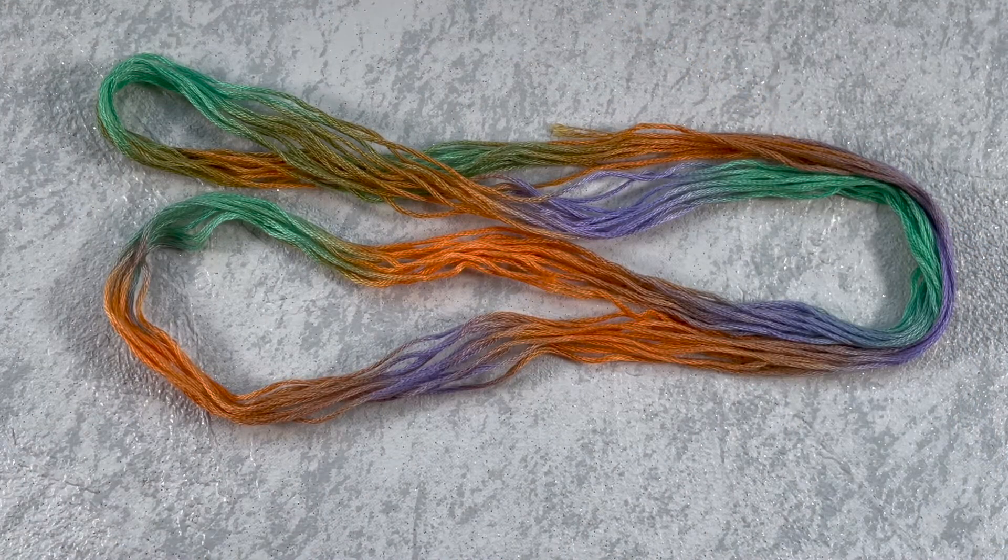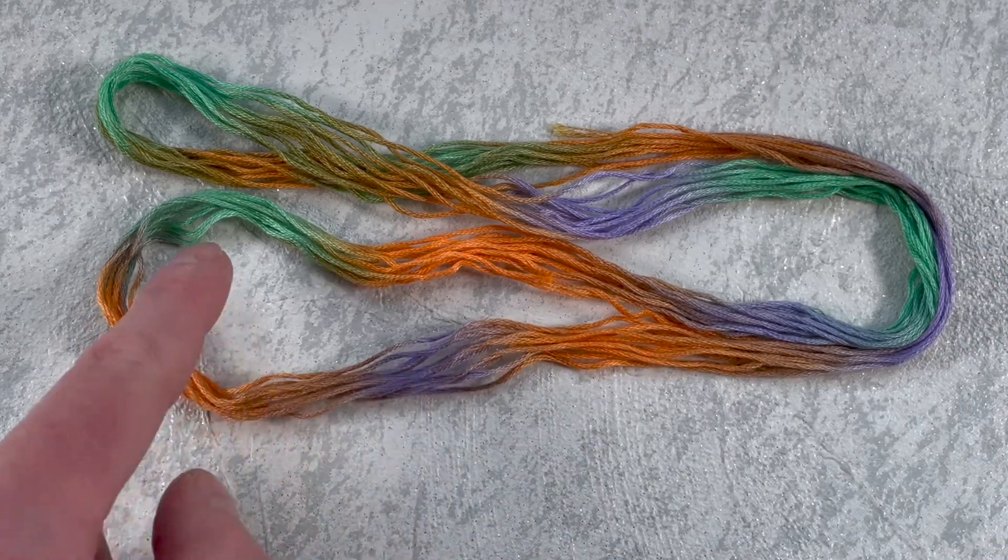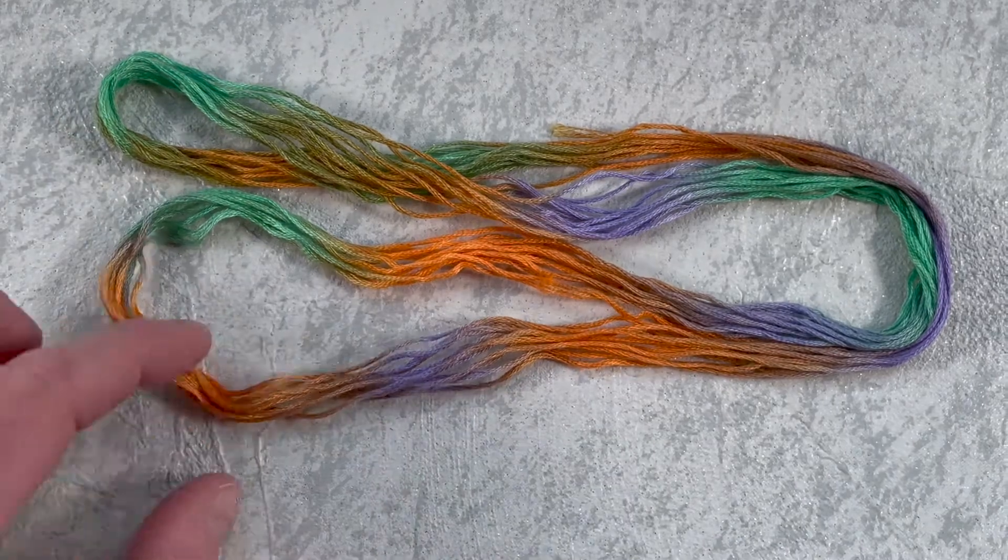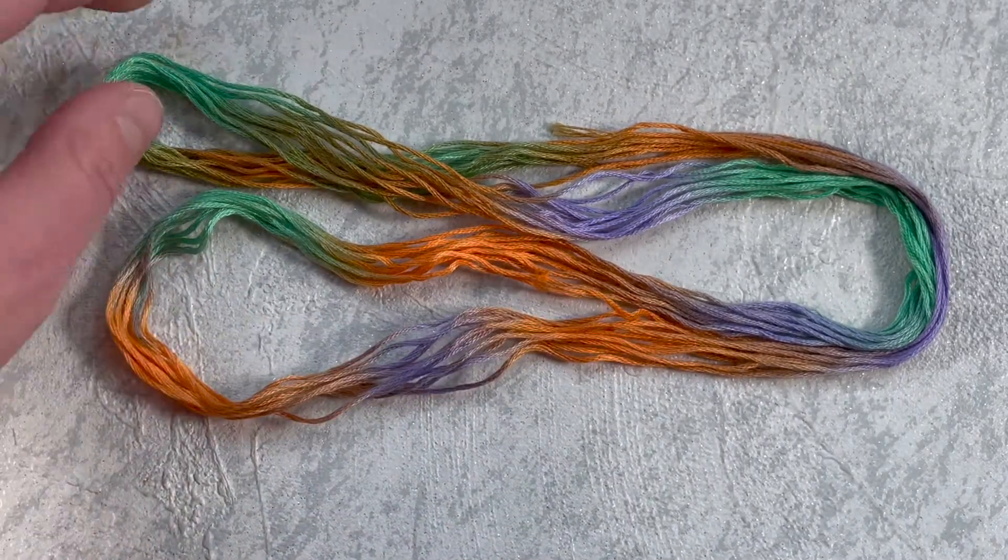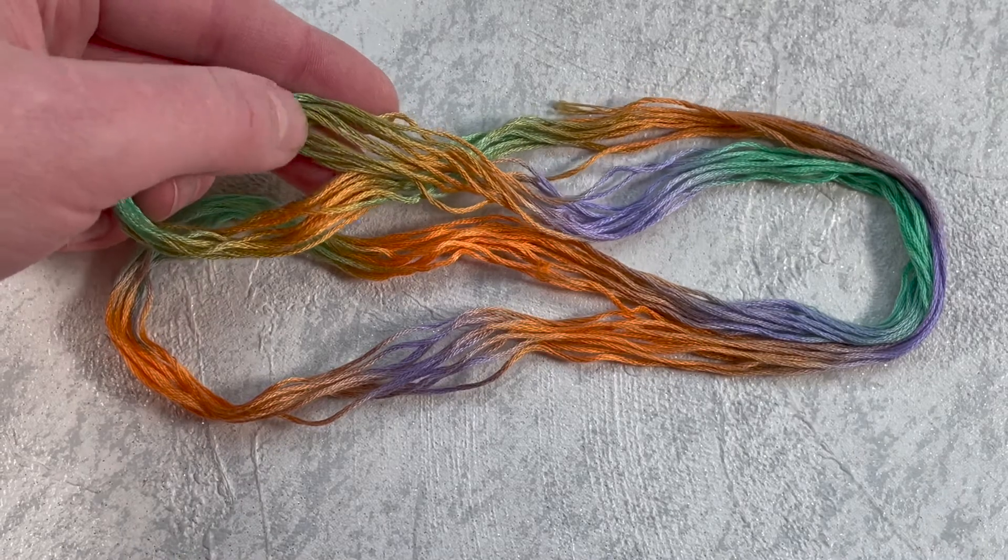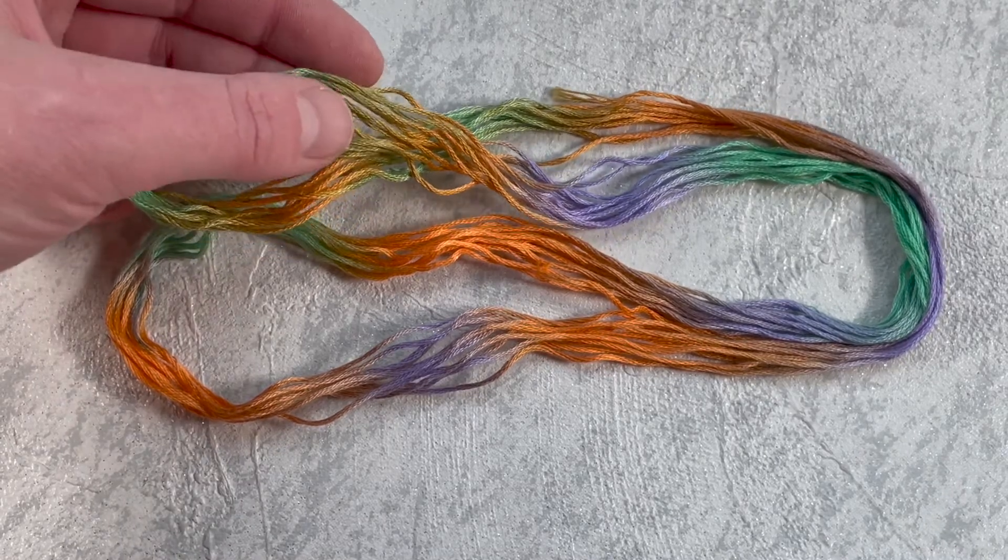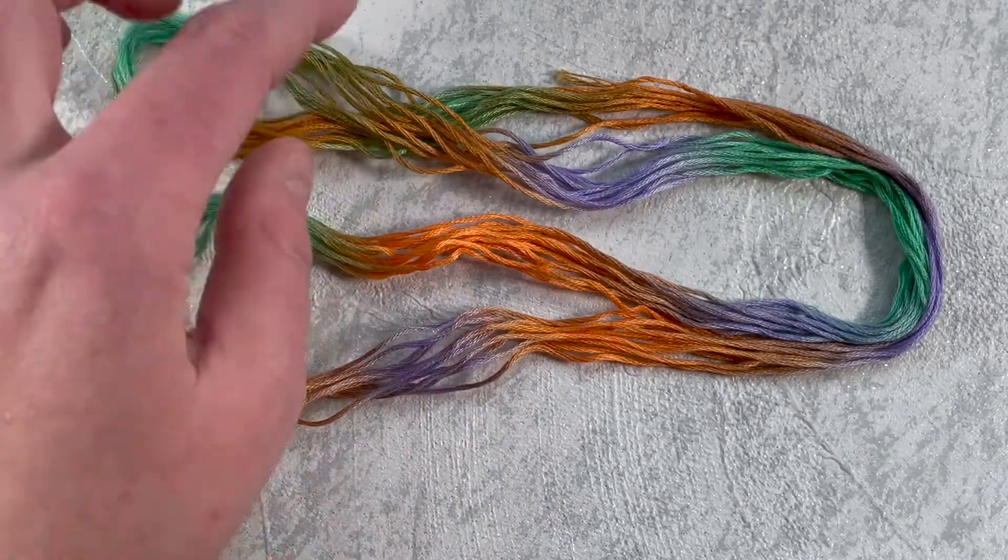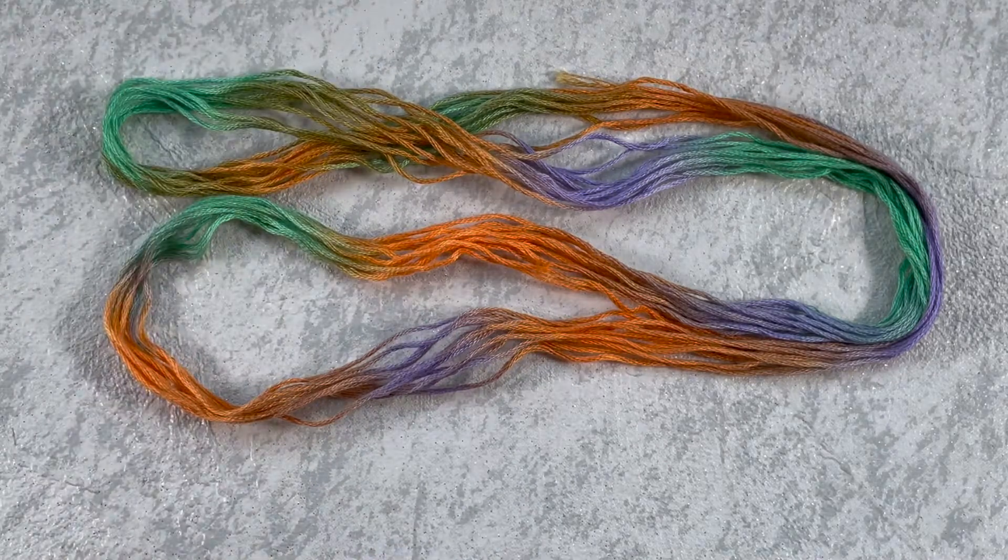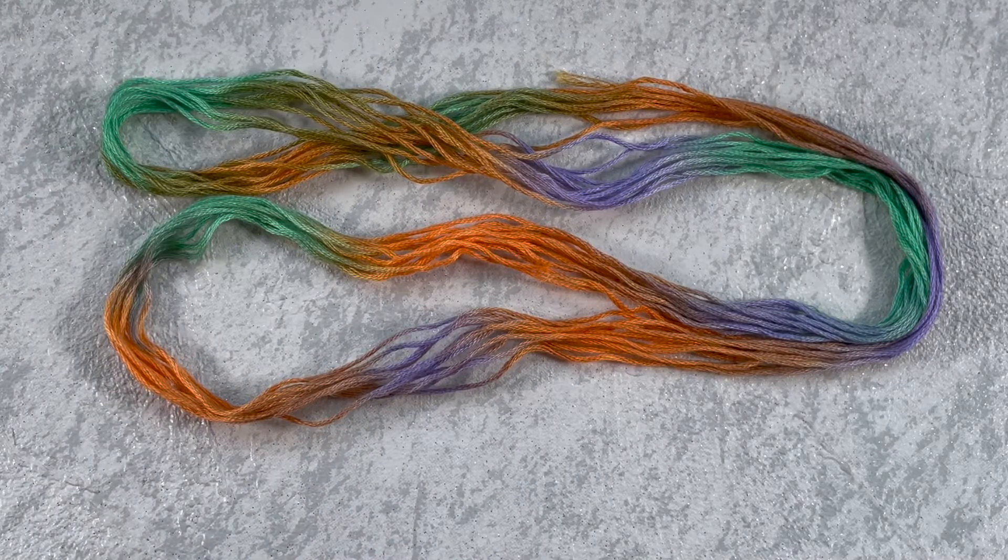And here is our finished floss. Now some of the colors when they fade into each other have muddied together a little bit, like here with the orange and purple. But over here I quite like this nice earthy dark green that fades from the green into the orange. I think that's really quite nice and I'm very happy with how this has turned out.